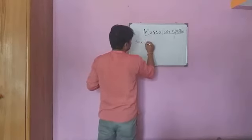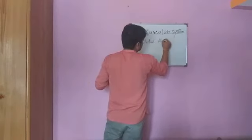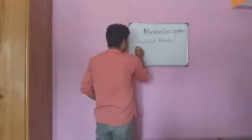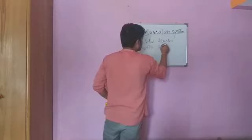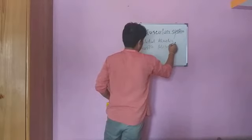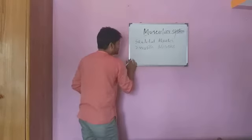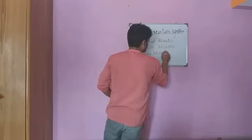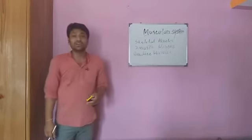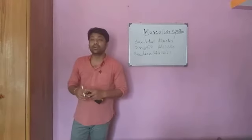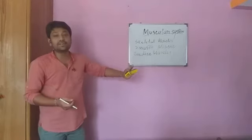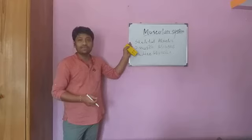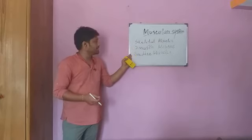The three types of muscles are: skeletal muscles, smooth muscles, and cardiac muscles. There are three types of muscles in the body: skeletal muscles, smooth muscles, and cardiac muscles.